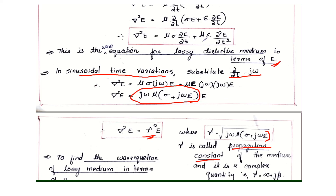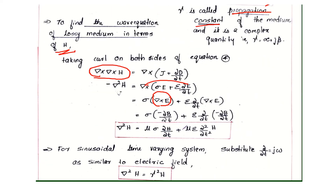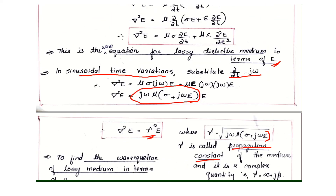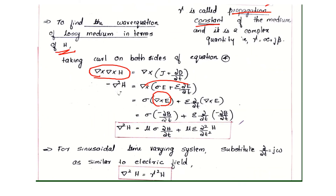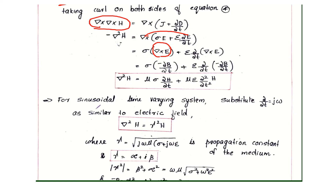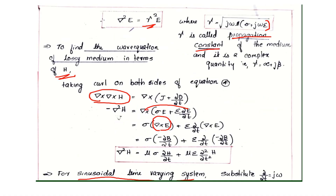Similarly, del squared H equals gamma squared H, where gamma squared equals mu sigma partial by partial t plus mu epsilon partial squared by partial t squared. For sinusoidal time-varying systems, substituting partial by partial t equals j omega, similar to the equation for E, we get del squared H equals gamma squared H.